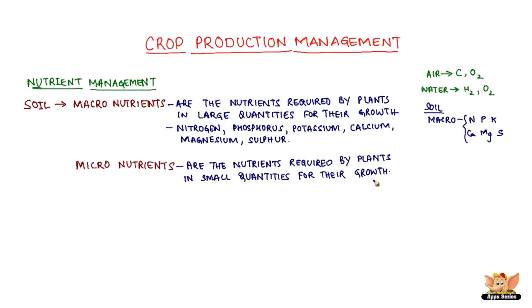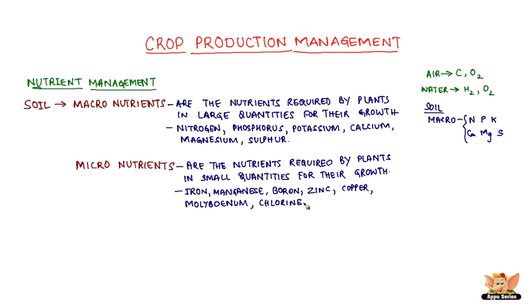Micronutrients are the nutrients required by the plant in small quantities. There are seven of them: iron, manganese, boron, zinc, copper, and chlorine.